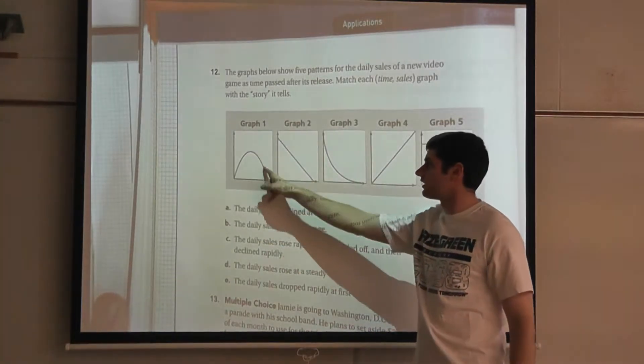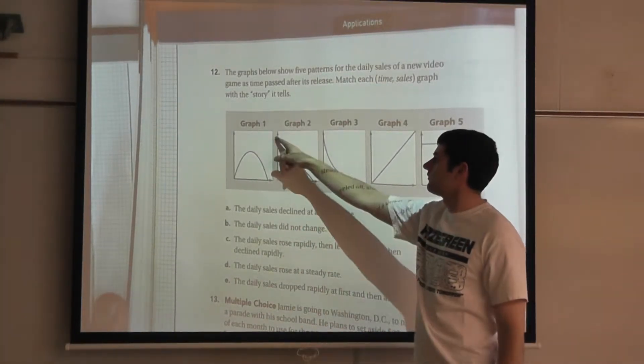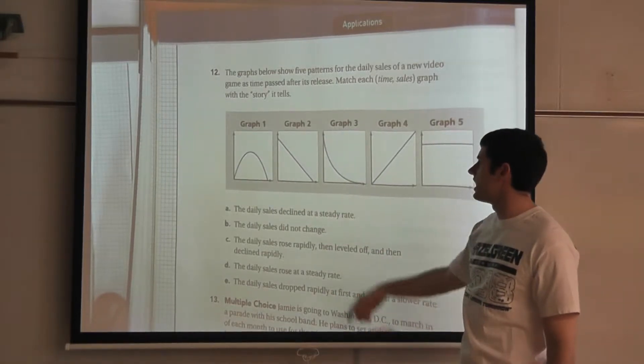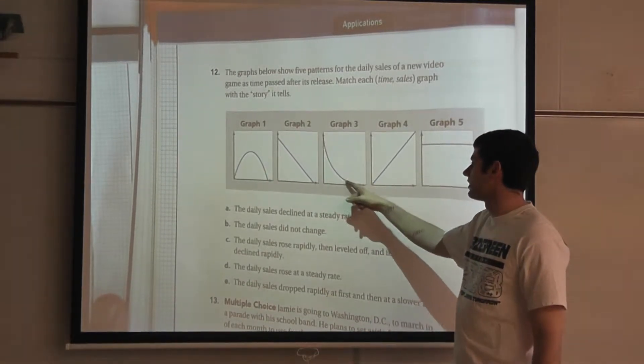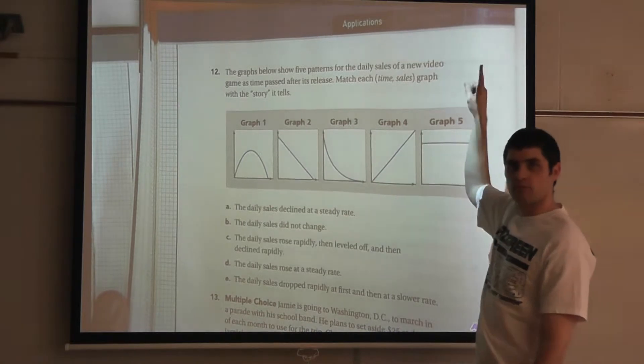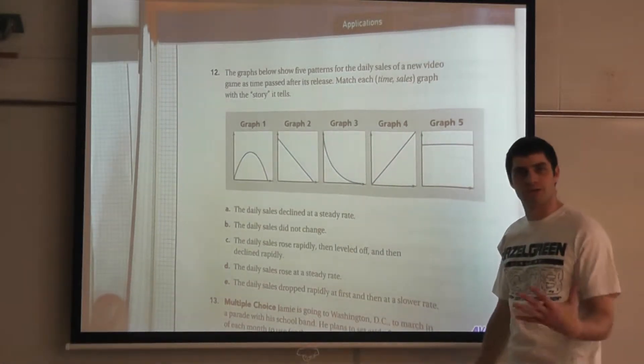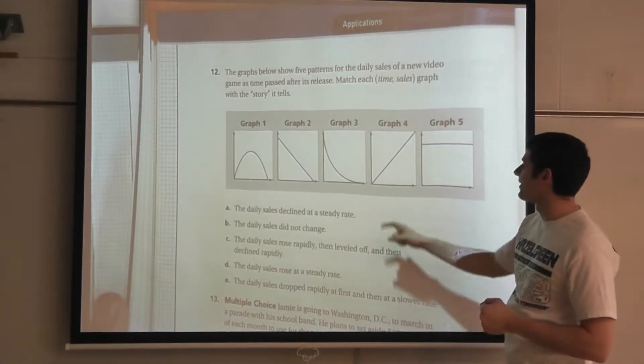Let's take a look. We have graph 1, kind of almost looks like a little mountain. Graph 2 just kind of goes down. Graph 3 almost kind of looks like a skateboard, like if I was going down the ramp and then shooting up, or a rip stick or whatever it is you guys ride around on today.